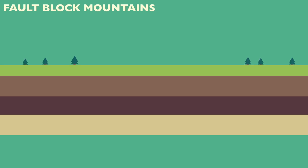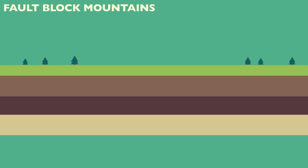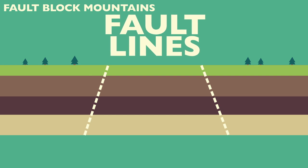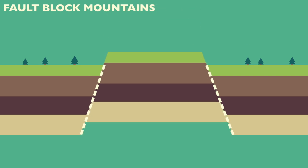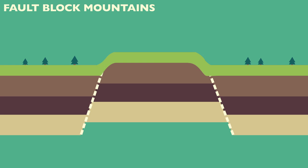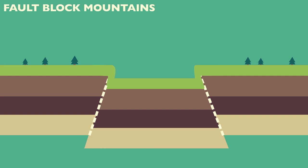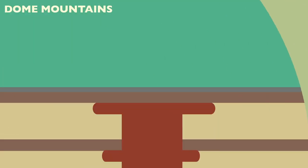Fault block mountains are also formed when two plates converge. Rather than the crust folding, under the intense pressure of the moving plates it cracks along lines of weakness called fault lines. The crust then breaks into a block which is pushed upwards. The action of wind and rain through weathering and erosion will also help to shape the mountain. In some cases, the block between the fault lines is pushed down to form a rift valley.